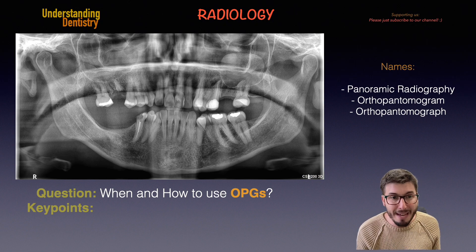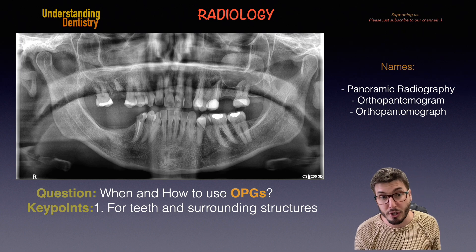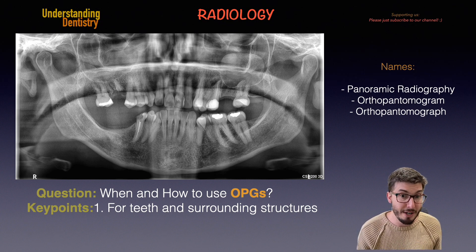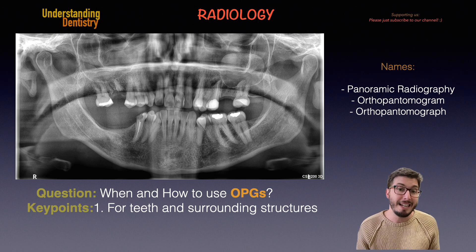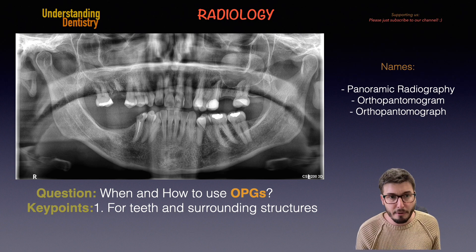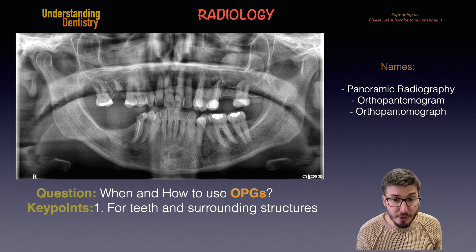Let's see the main key points for us to use panoramic radiographs. The first key point is we can use them for teeth and surrounding anatomical structures to have a general view of the patient. We need to always use this to complement our clinical evaluation — our physical extra-oral evaluation, our clinical intra-oral evaluation — and then ask the patient to undergo a panoramic radiograph to diagnose multiple situations at the same time. However, we don't have the same amount of detail as we have on periapical radiographs.